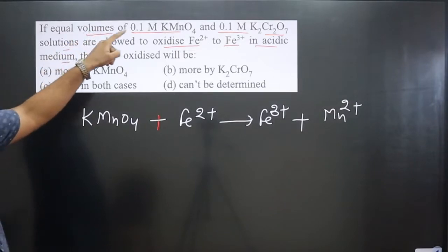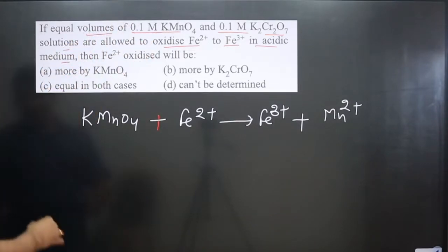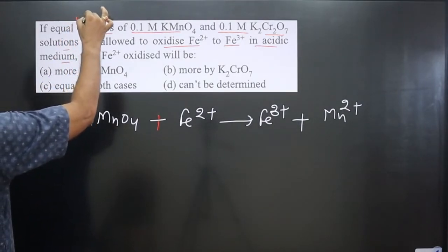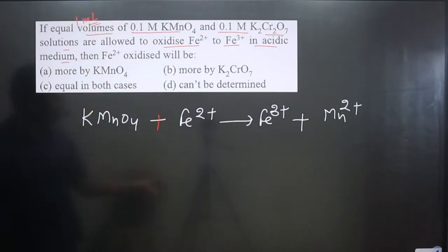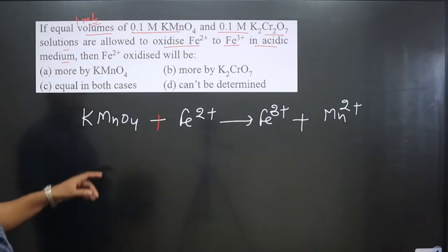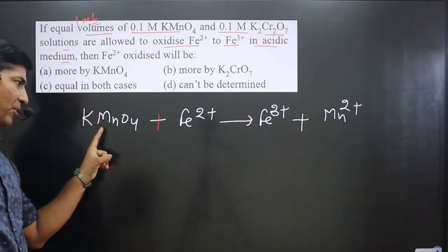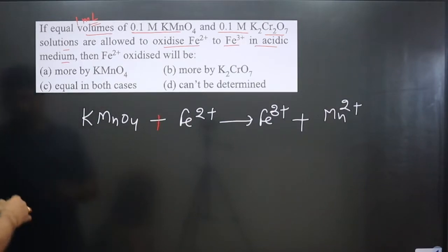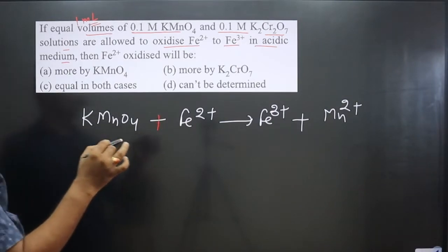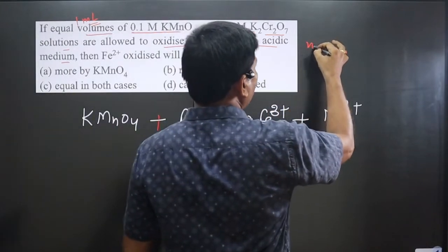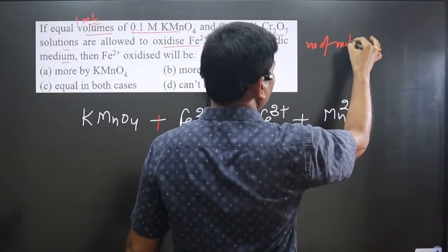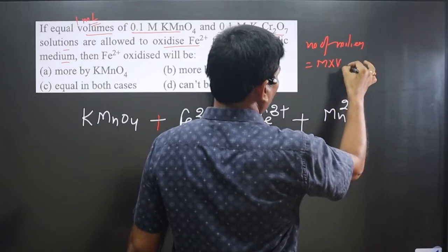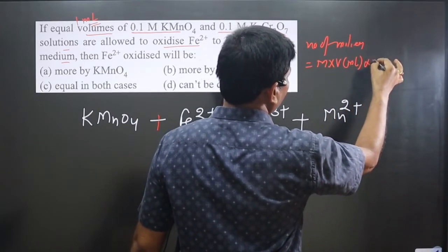Volume is given for KMnO₄ and molarity is given, so for easy calculation we assume 1 mL of each solution. The number of milliequivalents of KMnO₄ equals the number of milliequivalents of Fe²⁺. The formula for milliequivalents is: milliequivalents = molarity × volume (in mL) × n-factor.